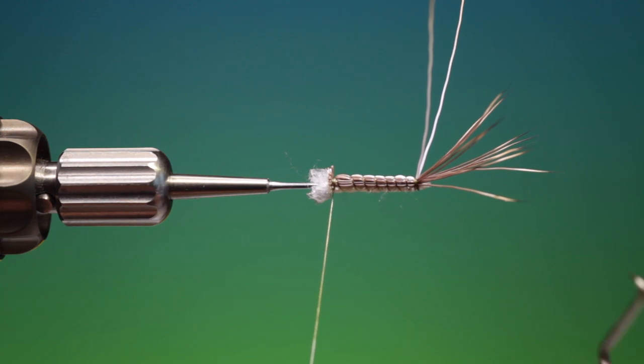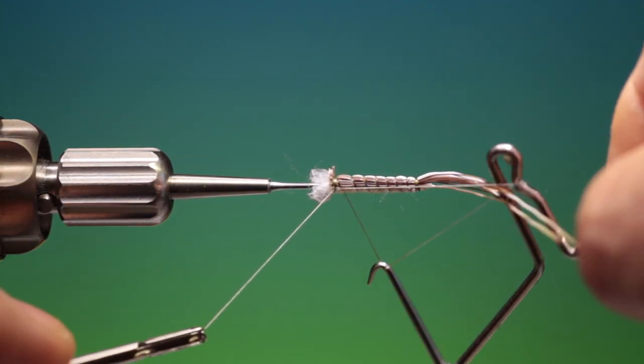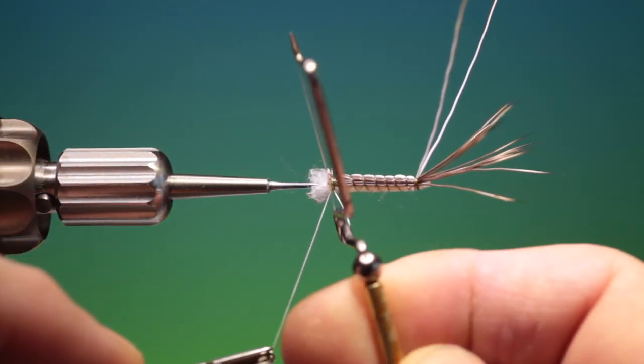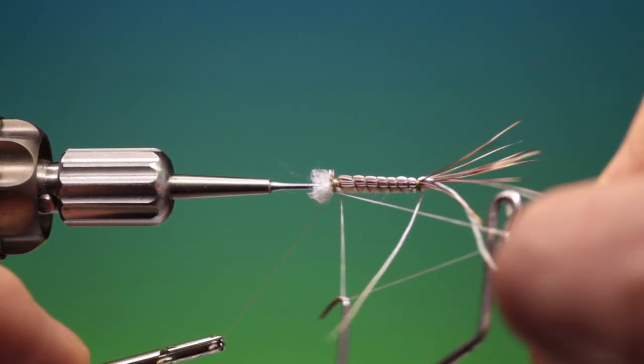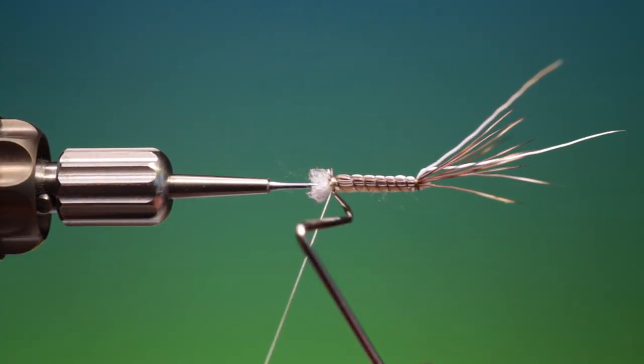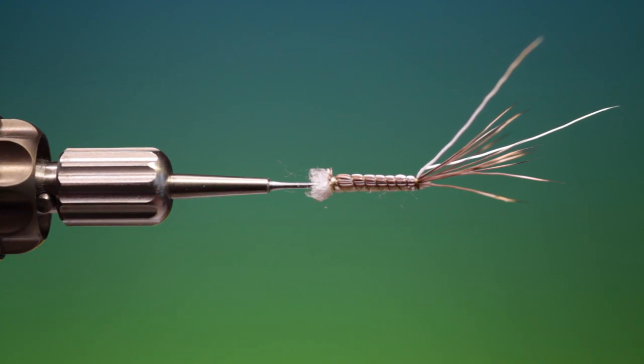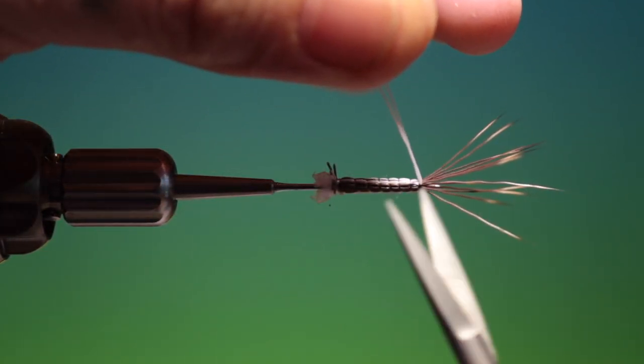Take our whip finisher, put a whip finish in there. I like to put two, like so. Remove that, then we can take hold easily of these two long white ones.